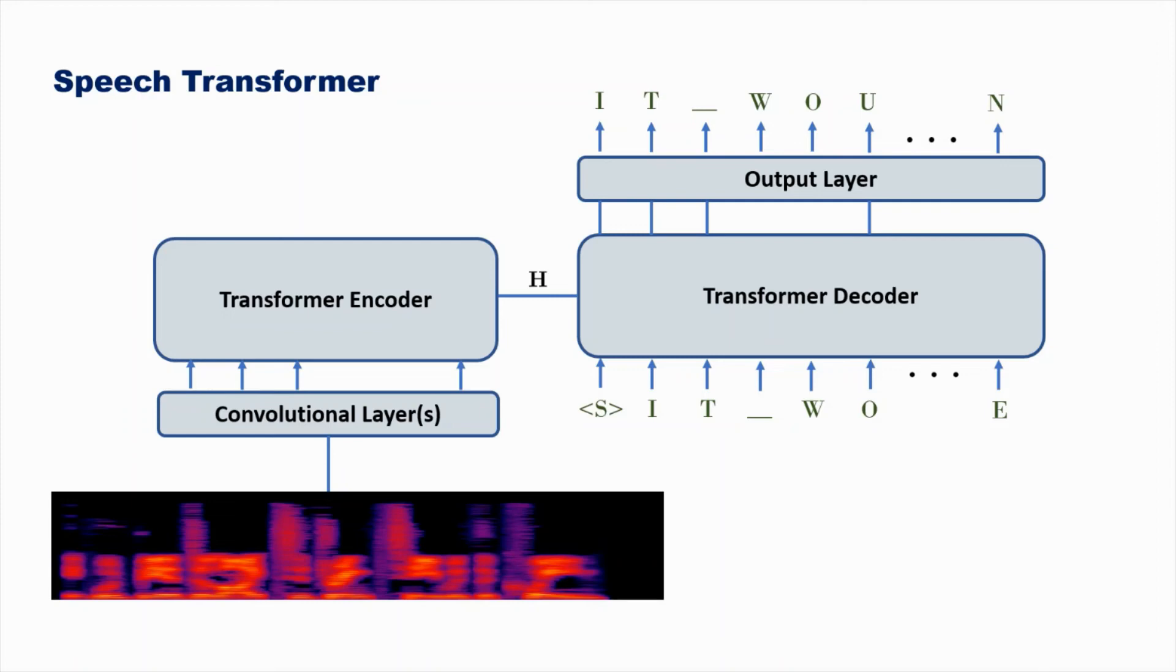Okay, that all makes sense apart from exactly how the output from the convolutional layers are fed into the transformer encoder, as the encoder expects sequential inputs. We also haven't discussed why do we have convolutional layers in the first place.